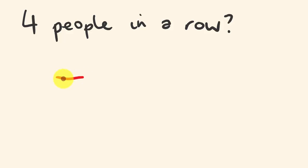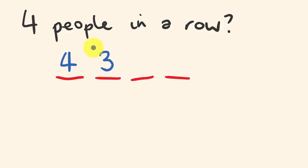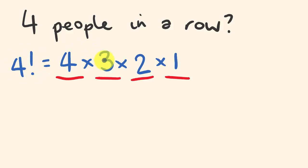The most simple type of permutation: how many different ways can we arrange four people in a row? We have four different positions. For the first position, we have four different people to choose from. Once we place one person there, we're left with three for the second position, then two, then one. So we multiply: four times three times two times one — that's four factorial, which equals 24 different arrangements.